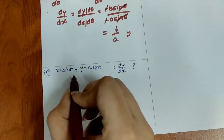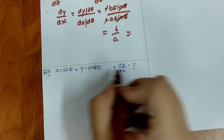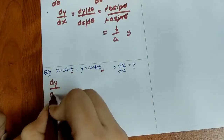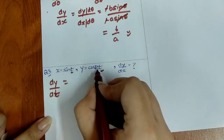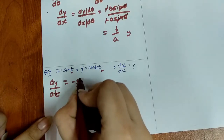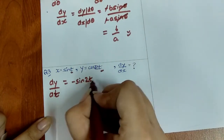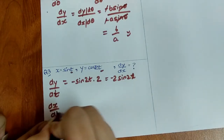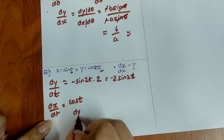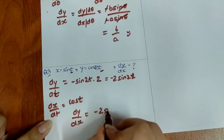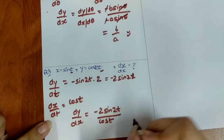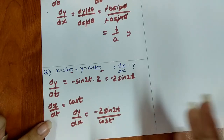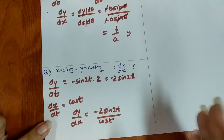Third question: x = sin t, y = cos 2t, find dy/dx. The mutual parameter is t. dy/dt: derivative of cos 2t is −sin 2t, then by chain rule multiply by 2, so dy/dt = −2 sin 2t. dx/dt: derivative of sin t is cos t. So dy/dx = −2 sin 2t / cos t. We can simplify this further.